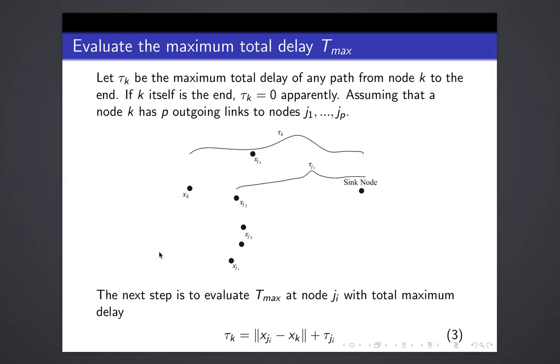The next step is to evaluate t_max at the node ji, it may be j1 or jp, with total maximum function defined by this. We can see that t_k is actually determined by the next step total maximum delay.